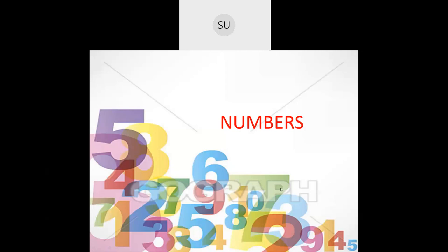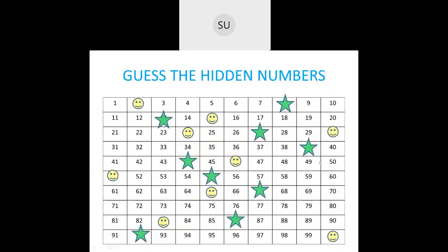Before that, let's do a quick revision on what you have learned in first standard. You'll have learned the numbers from 1 to 99 in first standard. Let's see the numbers from 1 to 100 — some of the numbers are hidden, so you have to guess. What number comes after 1, and before 3? We have 2. So we have 1, 2, 3, 4, 5, 6, 7.